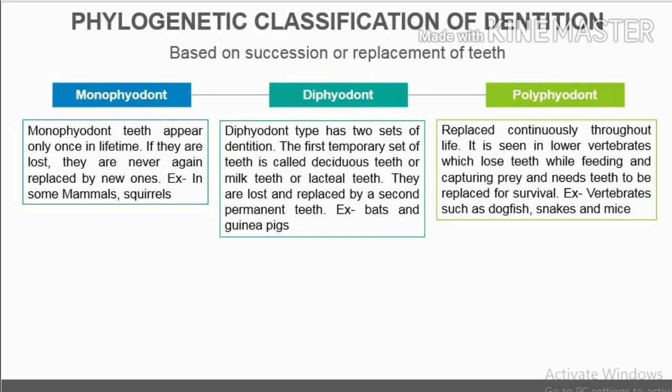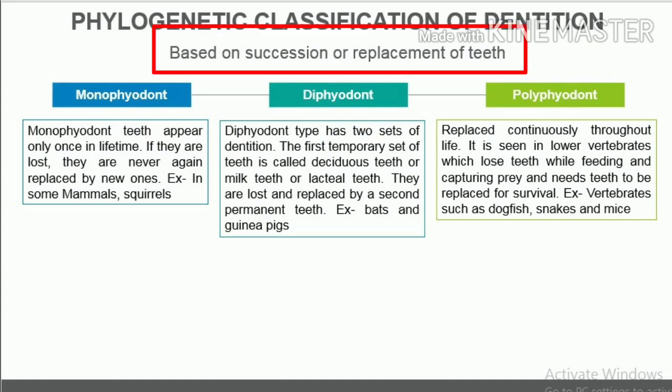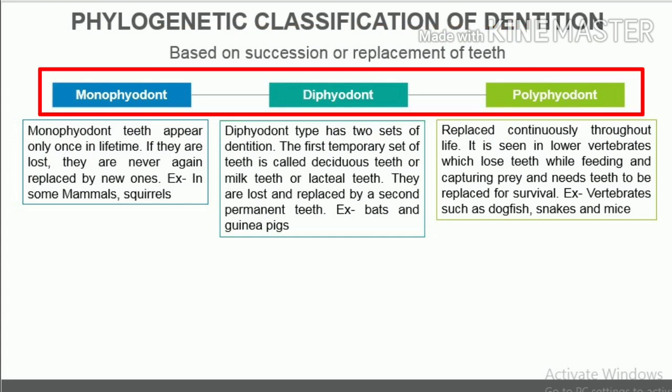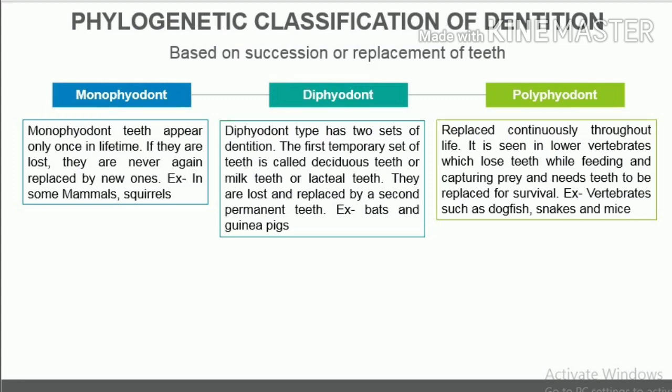Phylogenetic classification of dentition based on succession or replacement of teeth. According to succession or replacement, the teeth can be divided into three categories: monophyodont, diphyodont, and polyphyodont. Among mammals, the first two categories are found.